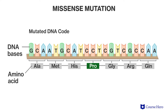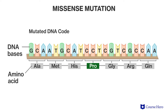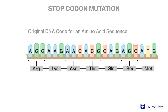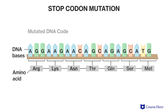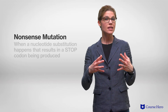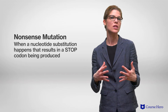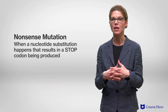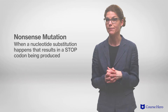If the protein's function isn't affected, however, we refer to this as a neutral mutation. When a nucleotide substitution happens that results in a stop codon being produced, it results in a shorter protein being made, because the translation of the mRNA strand is terminated too early. This is called a nonsense mutation, and usually results in a non-functional protein.